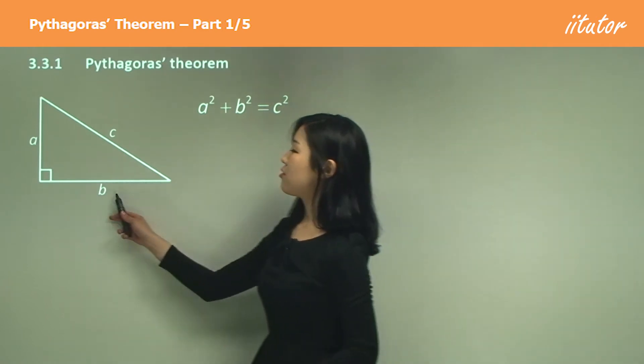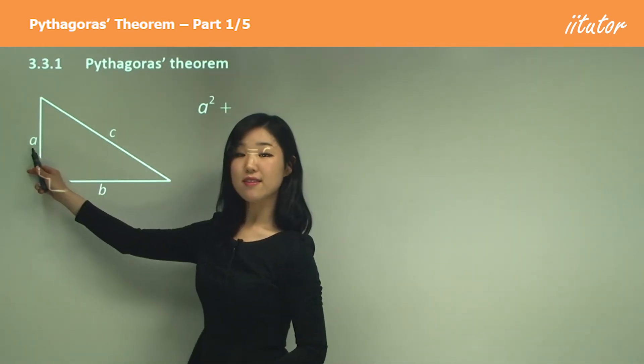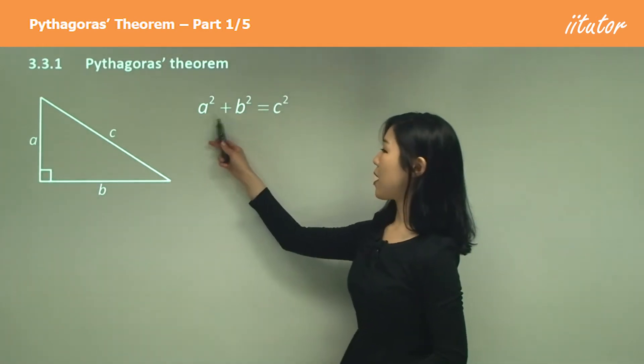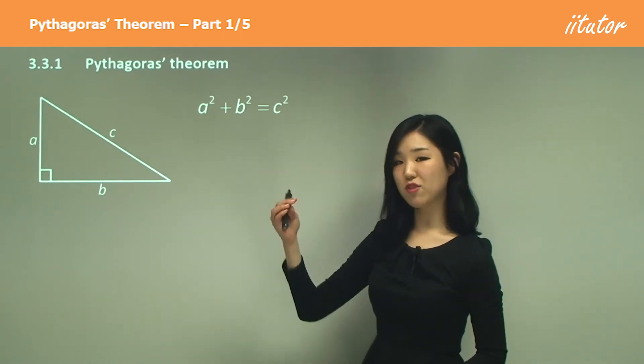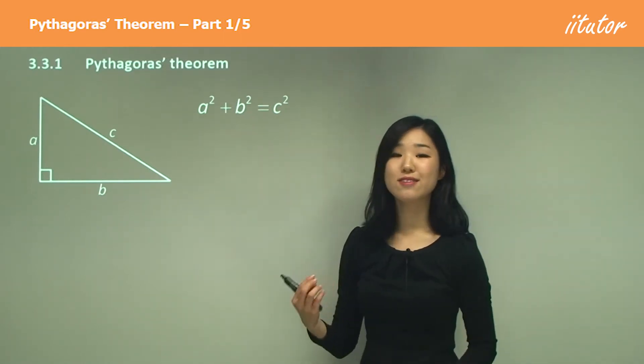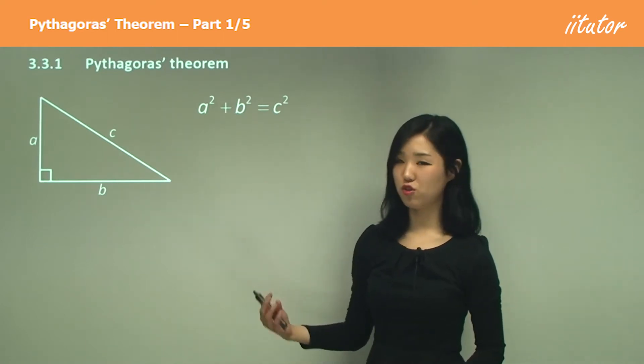The rule is the two other sides, so A and B: A squared plus B squared—you square them each and you add them up—it's going to be equal to C squared, the hypotenuse squared.